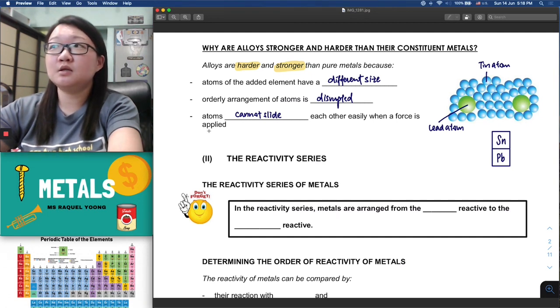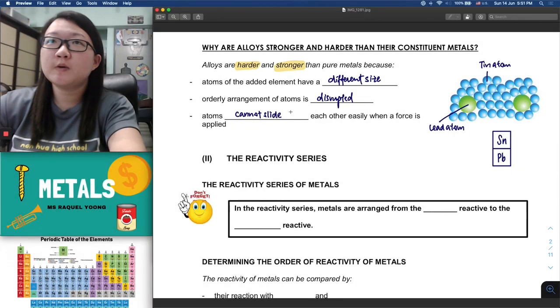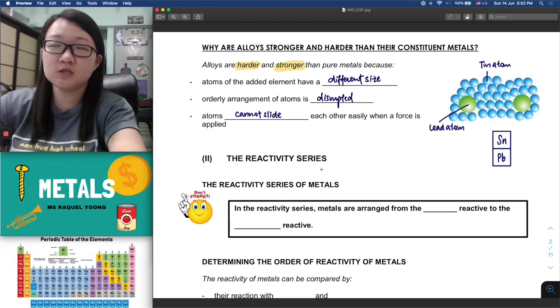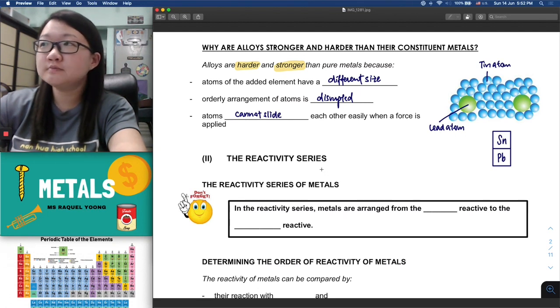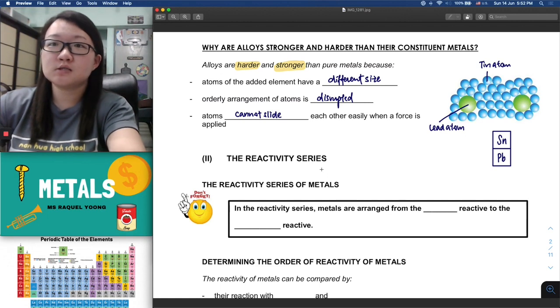So this part, there's another word here, cannot slide past. I forgot to write that in, so you just write it on your own. Yes, this is the end of part one of our lesson on metals. In the next lesson we will look at part two, which is the reactivity series. We will have a look at how different metals have different reactivity and investigate why. That's it, see you in the next lesson, goodbye.